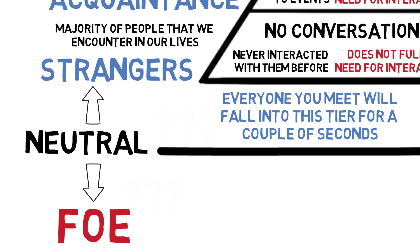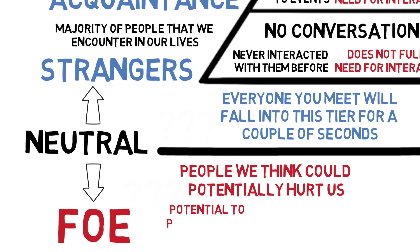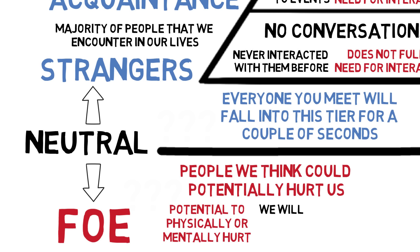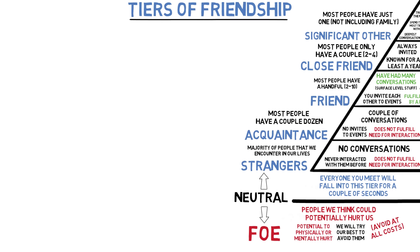The foe tier is reserved for people that we think could potentially hurt us. You've probably come across someone who looked out of it — maybe they were wearing rags, looked like they were on drugs, looked very angry, or appeared to be hiding a weapon. The way our brain sees it, someone like this is a huge potential problem — potential to physically or mentally hurt us. Because of this, we will subconsciously try our best to avoid them. If someone is forced to interact with what they consider to be a foe, they will enter a fight, flight, or freeze state, which is extremely uncomfortable. This is a tier that you want to stay out of as best as possible, and we'll cover exactly how in a future video.